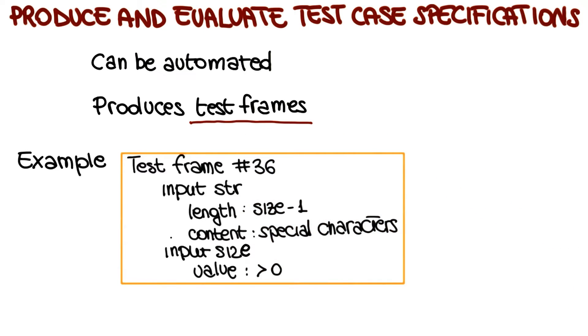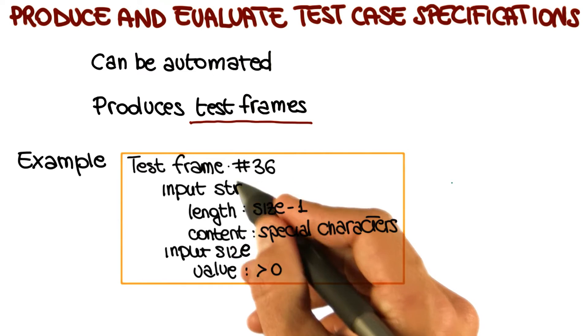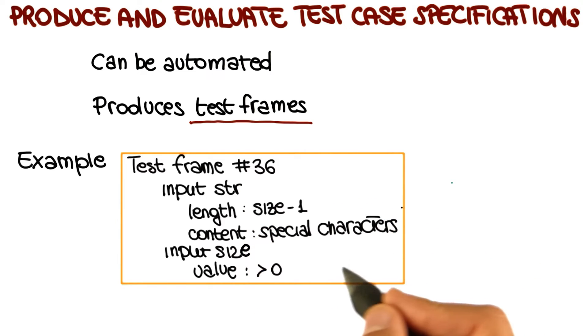What we are looking at here is a test frame for the program split. Test frames are normally identified by a sequence number. So in this case, we are looking at the 36th test frame. And what they do is simply specify the characteristics of the inputs for that test.